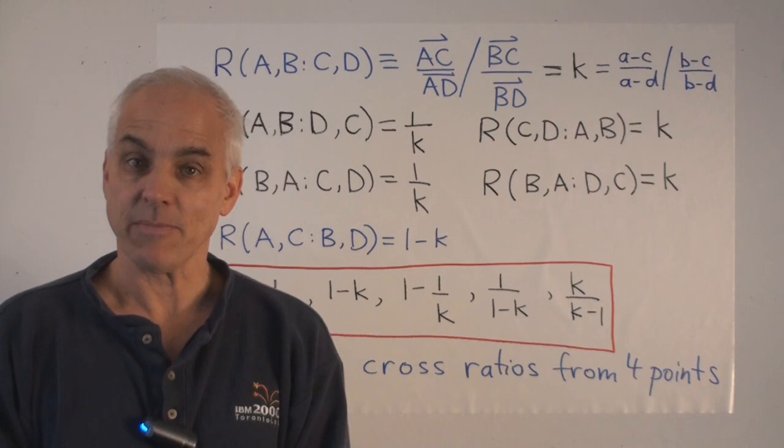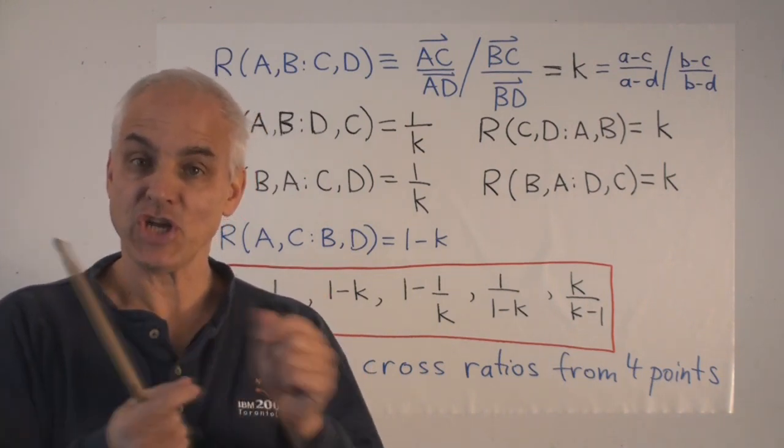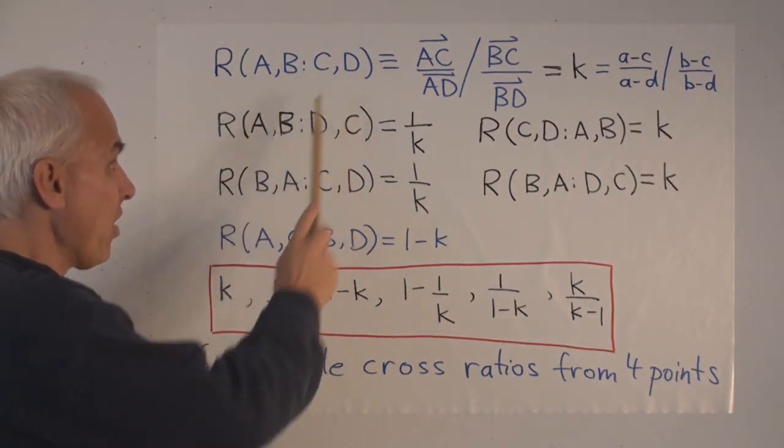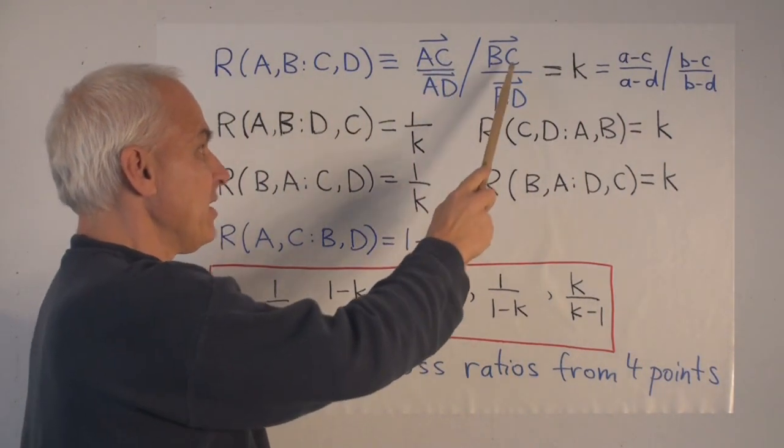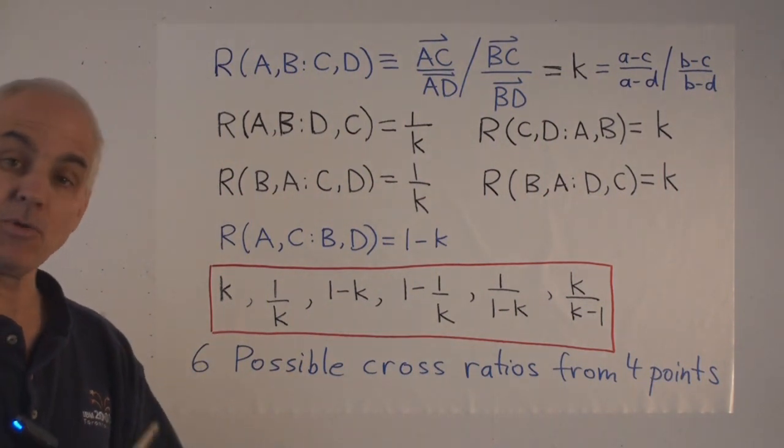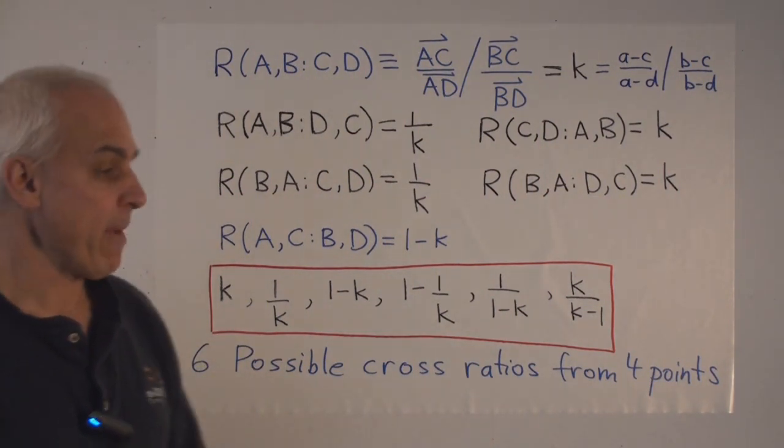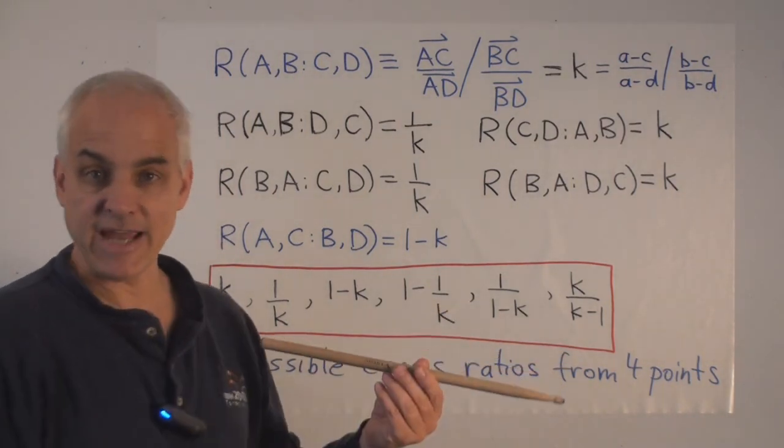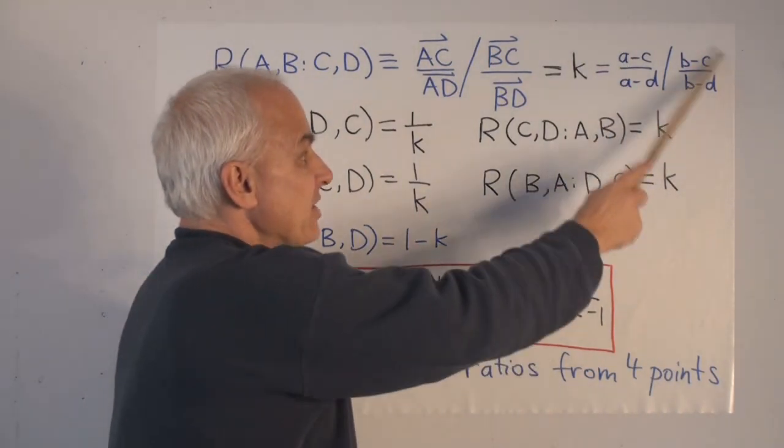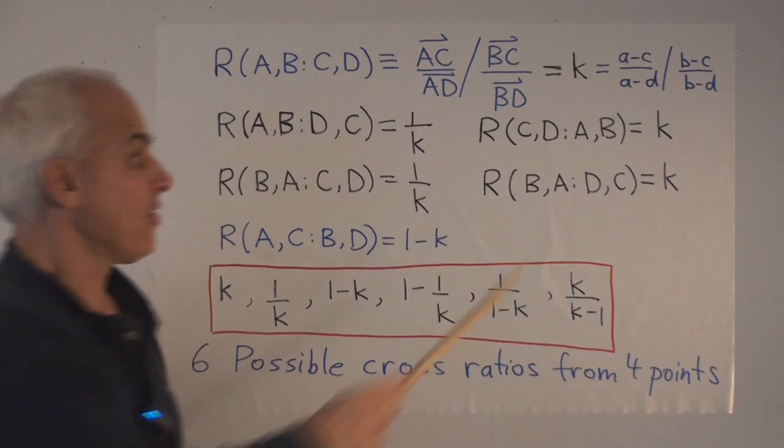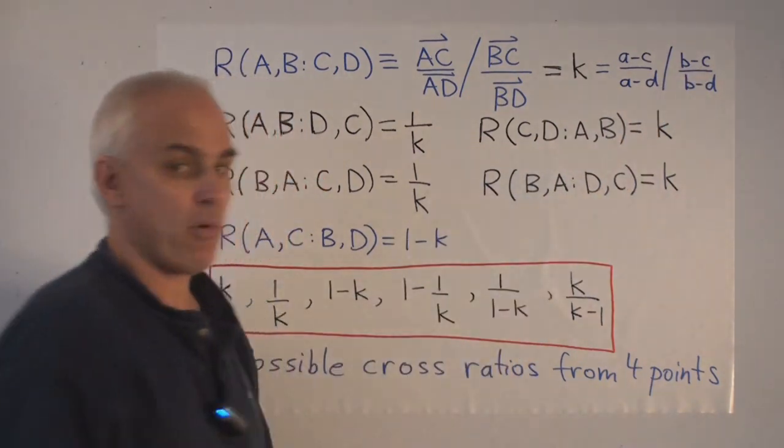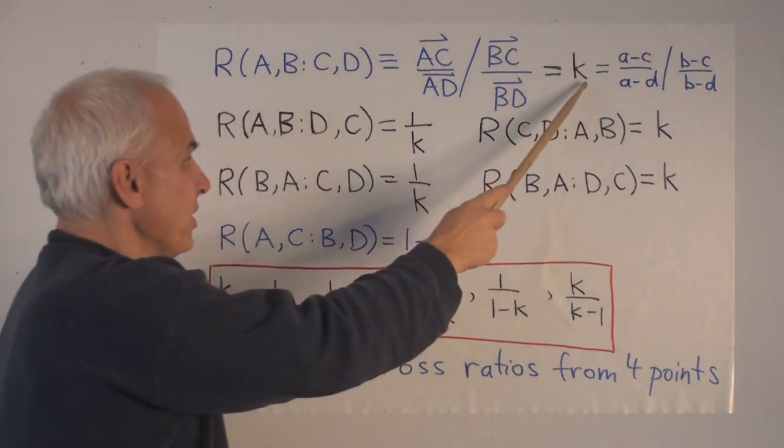Now let me mention a few things about what happens to the cross-ratio when we interchange the order of the points. So suppose we have four points A, B, C, D with this cross-ratio, defined by AC over AD divided by BC over BD, equal to some number K. And it will be useful in calculation to imagine that these four points may be, for example, on the x-axis with coordinates A, B, C, D, little a, b, c, d, in which case the cross-ratio can be described by this ratio of ratios of numbers. These are just the ordinary x-coordinates of the four points. So we'll suppose that that cross-ratio is K.